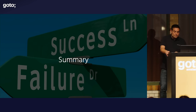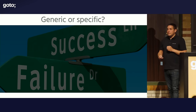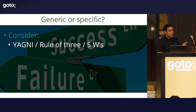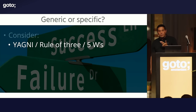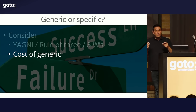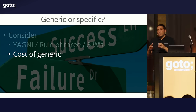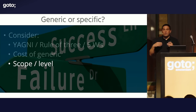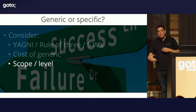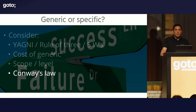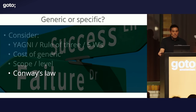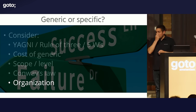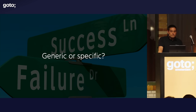To summarize: should you go generic or specific? Consider YAGNI, the rule of three, the five whys. Consider what's the cost of going generic — it may be more work now and more time to understand and maintain in the future. Think about scope and level — going generic on a class level, module level, service level, or organization level all have different implications. Think about Conway's Law — if teams don't want to work together, maybe don't force them to use generic libraries. And think about sharing code on an organizational level. Simple answer: it depends.